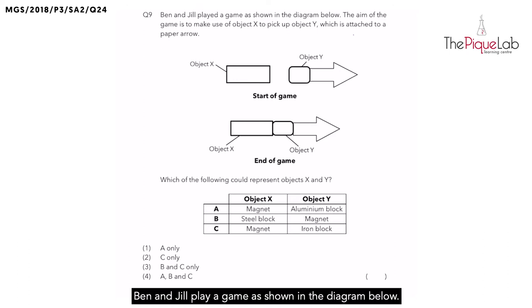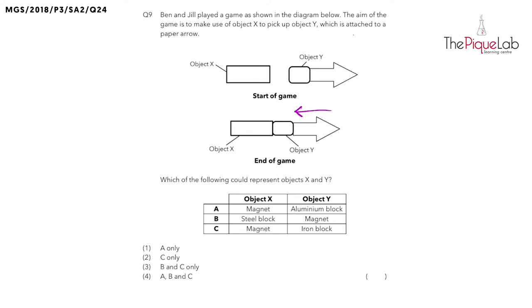So let's get started. Ben and Drew played a game as shown in the diagram below. The aim of the game is to make use of object X to pick up object Y which is attached to a paper arrow. As you can see in the diagram here, it shows us that object Y moved towards object X. Which means in order for object X to pick up Y, both have to be attracted to each other.